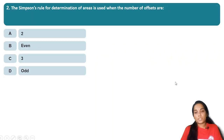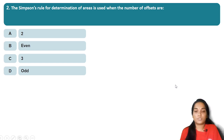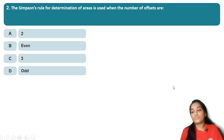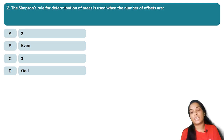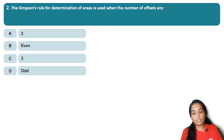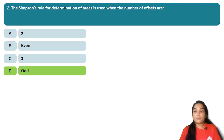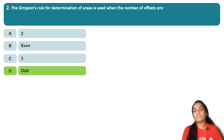Let's go to the area and volume calculation. Simpson's rule for determination of area is used when the number of offsets or ordinates is odd. That's why we suggest Simpson's rule for an odd number of ordinates.